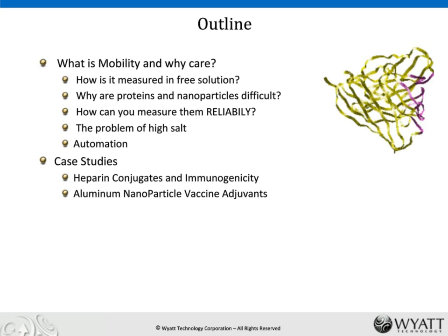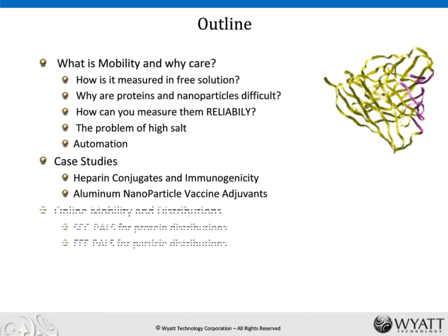The two case studies I'm going to talk about are heparin conjugates and immunogenicity, and aluminum nanoparticles used as vaccine adjuvants. I'm a physicist, so you might get a slightly idiosyncratic view of the applications. I'll also talk about something really exciting: a brand new application of mobility measurement — the ability to couple online size exclusion chromatography and field flow fractionation to mobility detection. This has never been done before.